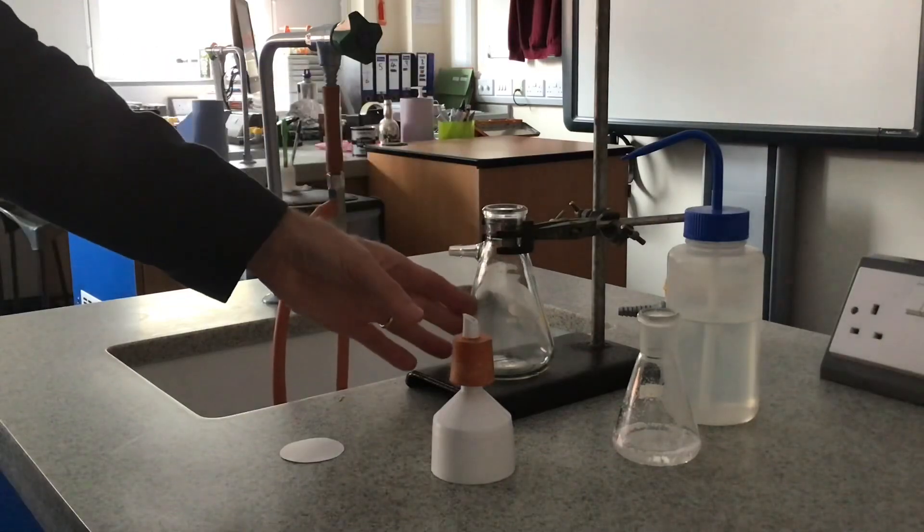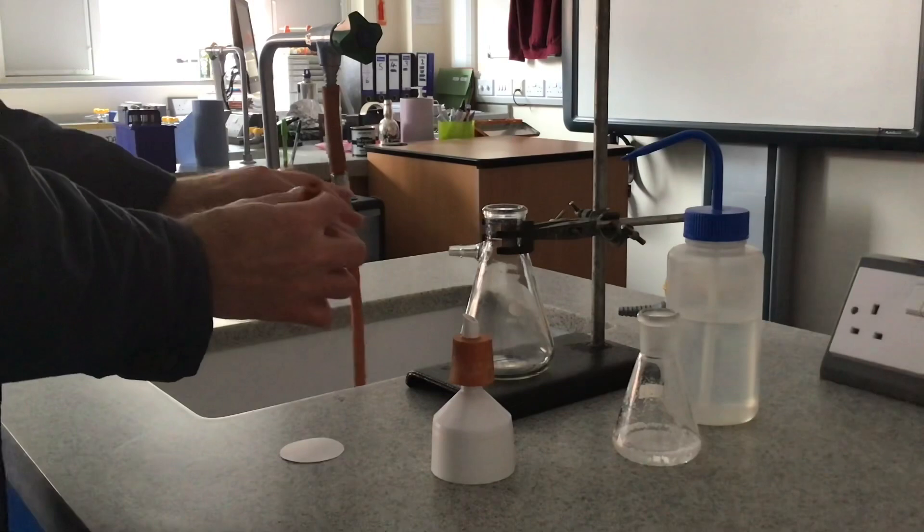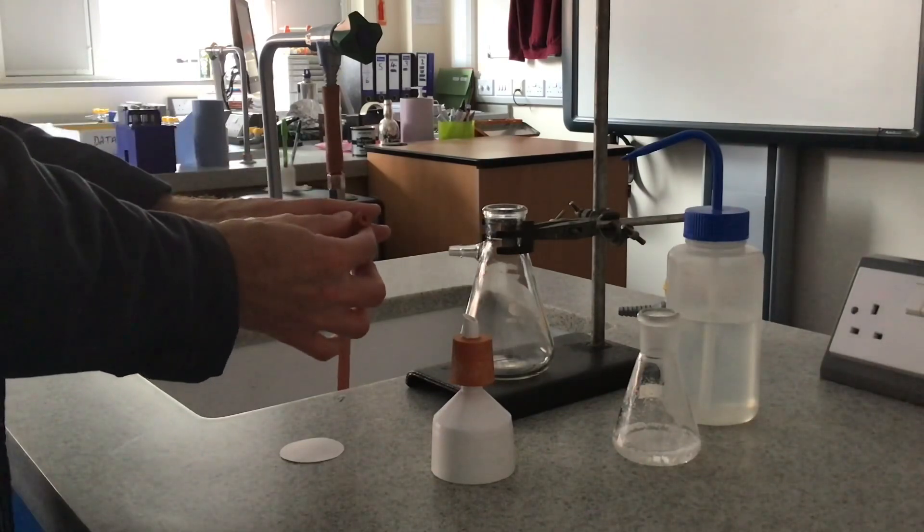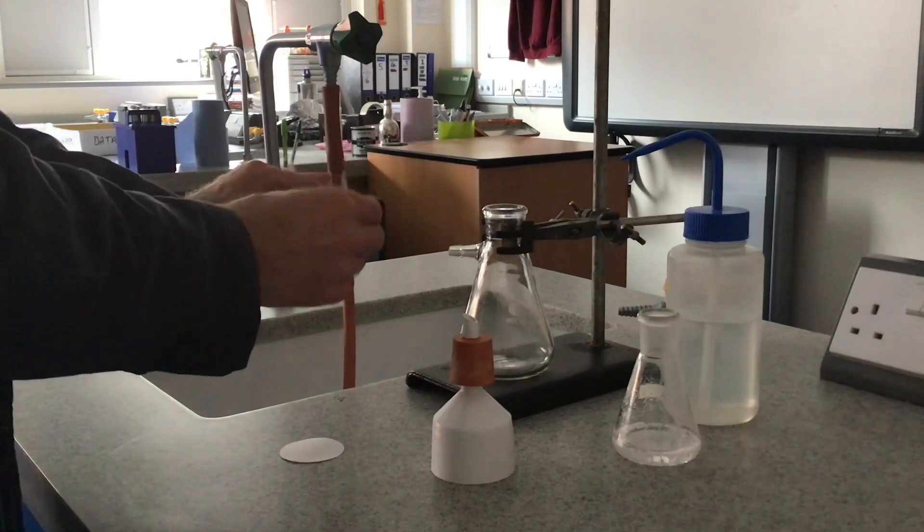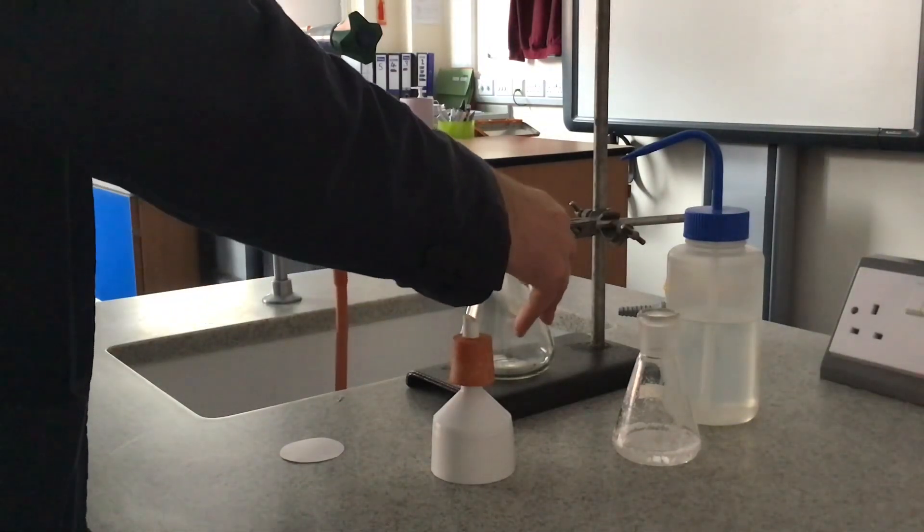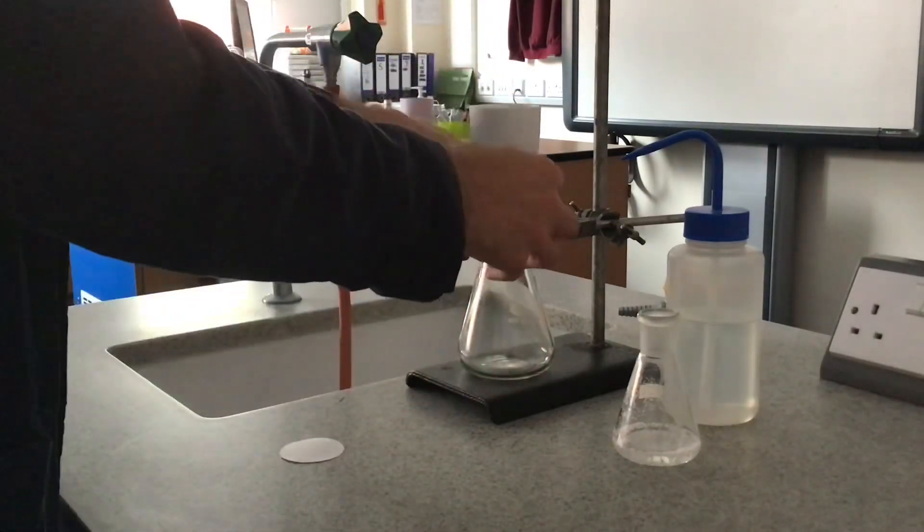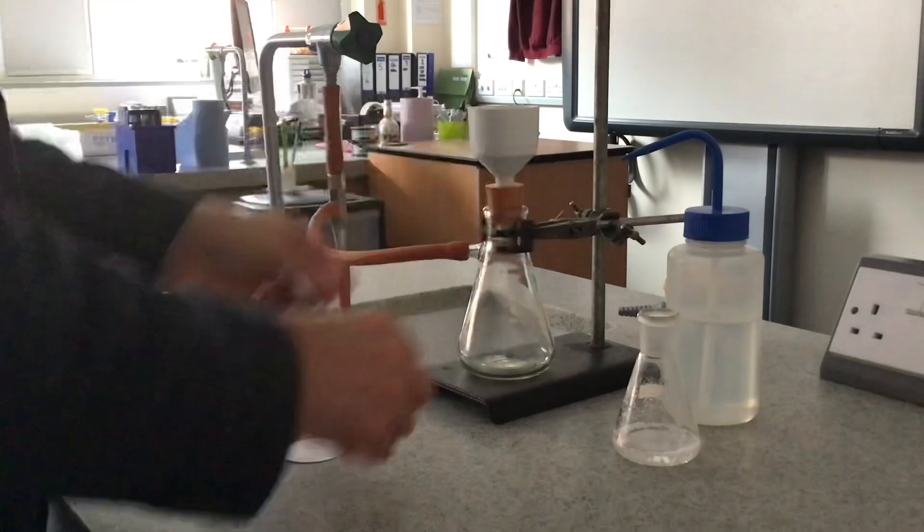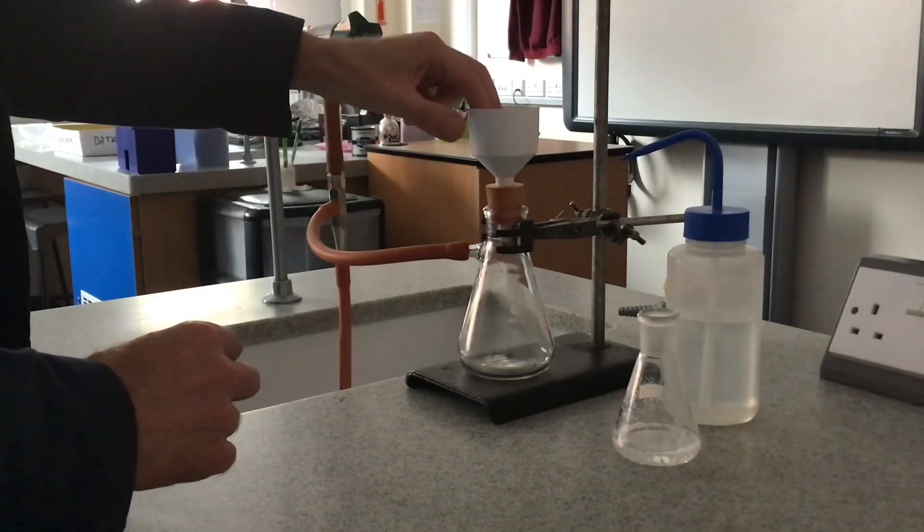I've clamped up the Buchner flask, so the first thing I'm going to do is connect this pressure tubing. This part of the water pump has high pressure tubing, so it's very thick rubber tubing. I'm then going to put on the Buchner funnel, make sure it's well sealed, and then put the filter paper disc in. Make sure all those holes are covered.